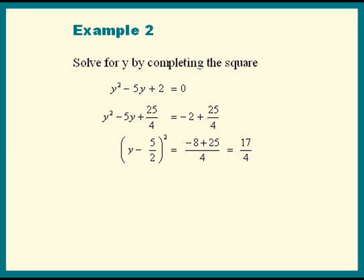The next step is to take the square root of both sides. We get y minus 5 over 2 is equal to plus or minus the square root of 17 over — the square root of 4 is 2, so right away let's put a 2 there.